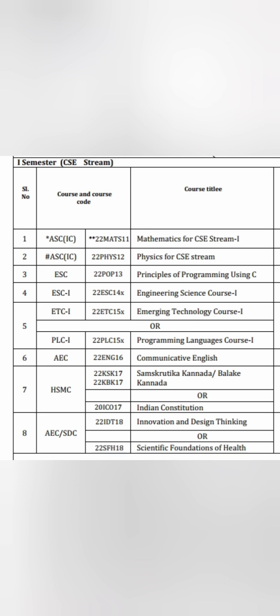Now here is the plan for the first semester CSE students. First semester CSE means CSE, ISE, biotechnology, and all the CSE specialization students — this is applicable for the CSE stream. The first subject is Mathematics for CSE stream 1, which is the mathematics for semester 1. Mathematics for CSE stream 2 is for the second semester. Similarly, Physics for CSE stream and Principles of Programming using C are compulsory subjects.